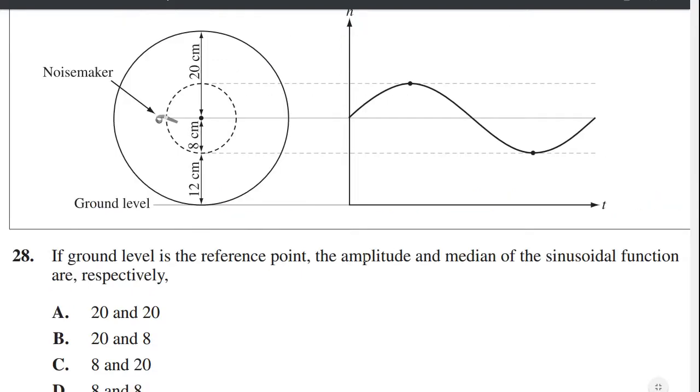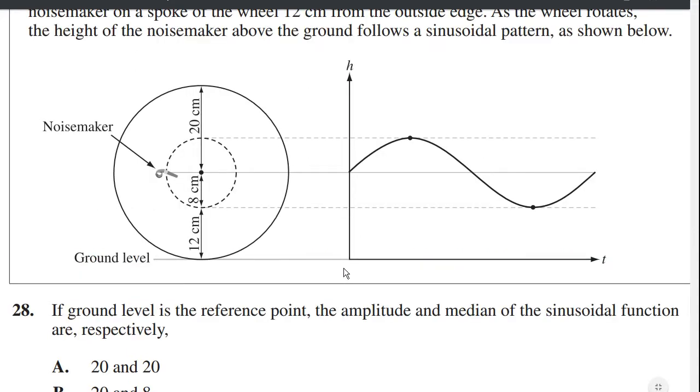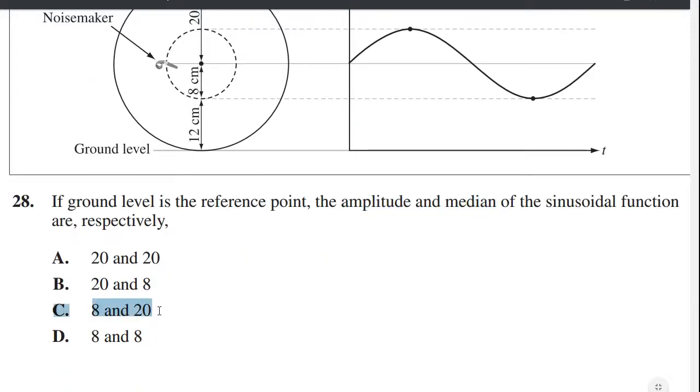So what do they mean by amplitude? Amplitude is how high or low the function gets from its middle point. So its middle point is obviously this middle line here. The height is the amplitude. So the height is 8 centimeters. That's pretty simple. What about the median? The median is the average height. Well, the average height off the ground is this middle line, which is 20 centimeters off the ground. So the amplitude is 8, and the median is 20. Amplitude and median, respectively. So amplitude 8, median 20. 8 and 20. C is the answer.